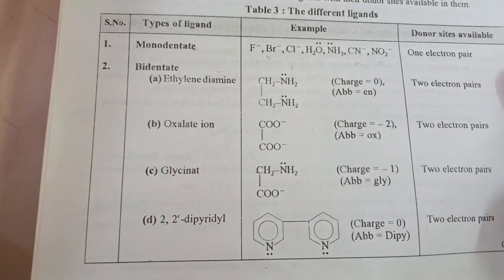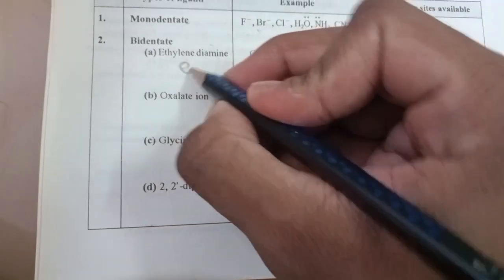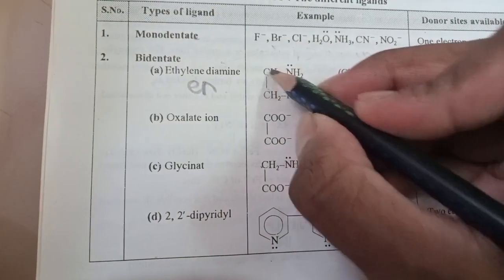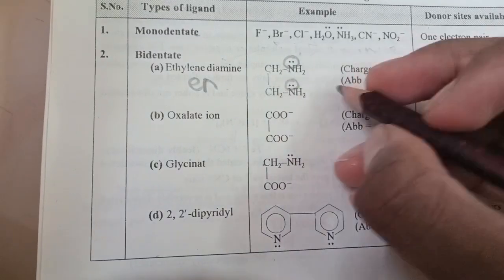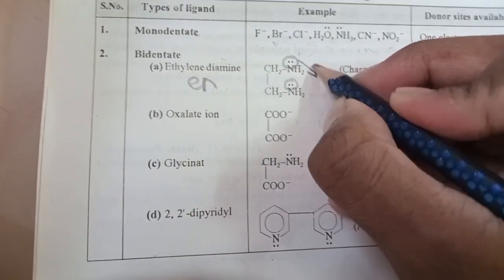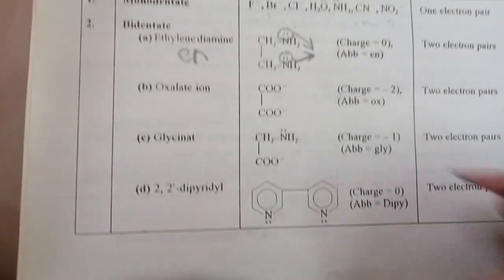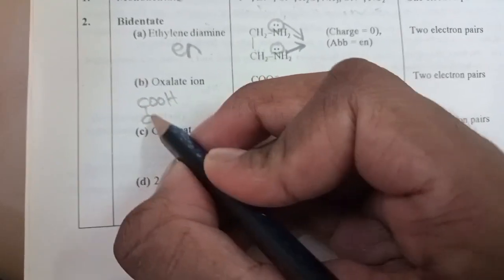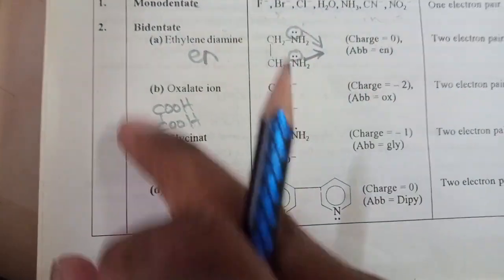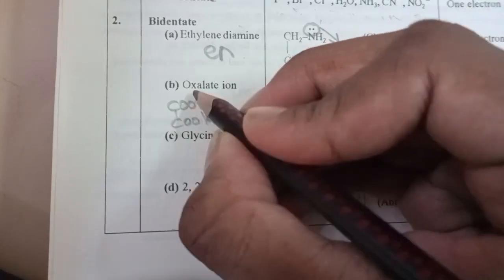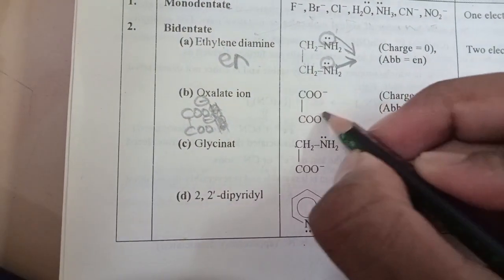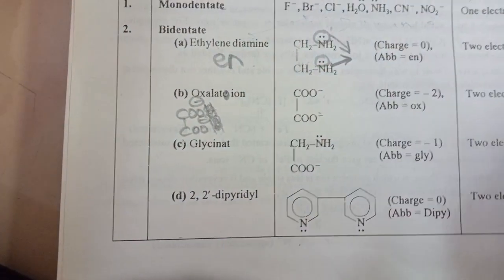Now let's start with bidentate ligands. The first is EN — ethylene diamine. This is the structure of ethylene diamine; it has a lone pair and donates to the metal. The second bidentate ligand is oxalate ion — oxalic acid has two COOH (carboxylic acid) groups. Removing two H⁺ gives the oxalate ion with two negative charges. As a ligand it is called oxalato.